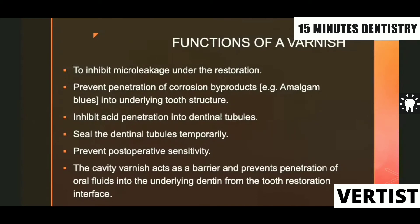When we talk about corrosion, can you define it? What is tarnish? Tarnish is surface discoloration. What is corrosion? Corrosion is surface roughening, or chemically, the material gets degraded.